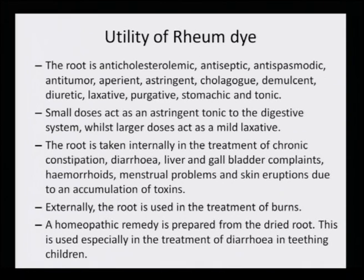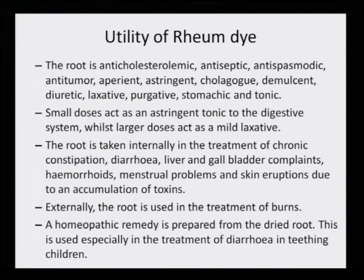Some more utilities of rheum dye that have been practiced: the root is anti-cholesterolic, antiseptic, antispasmodic, anti-tumor, aperient, astringent, cholagogue, demulcent, diuretic, laxative, purgative, stomachic and tonic. Small doses act as an astringent tonic to the digestive system, while larger doses act as a mild laxative. The root is taken internally in the treatment of chronic constipation, diarrhea, liver and gall bladder complaints, hemorrhoids, menstrual problems and skin eruptions due to accumulation of toxins. Externally, the root is used in the treatment of burns. A homeopathic remedy is prepared from the dried root, used especially in the treatment of diarrhea and in teething children.